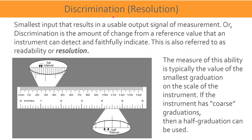Discrimination or resolution is the smallest input that results in a usable output signal of measurement. For example, consider a pressure gauge — when the smallest input of pressure is given to the dial pressure gauge, it results in a usable output signal of measurement and movement of the indicator on the dial.